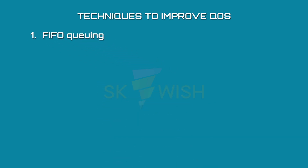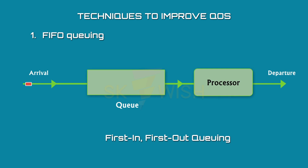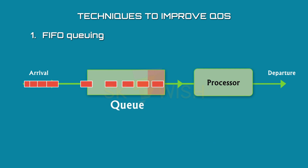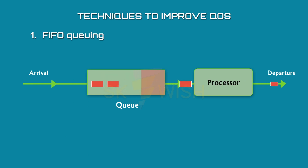FIFO Queuing stands for First In, First Out Queuing. In this method, packets wait in a buffer or queue until the node is ready to process them. If the arrival rate is higher than the processing rate, the queue will fill up and new packets will be discarded. The oldest entry is processed first — that is, packets leave the queue in the order in which they arrive.